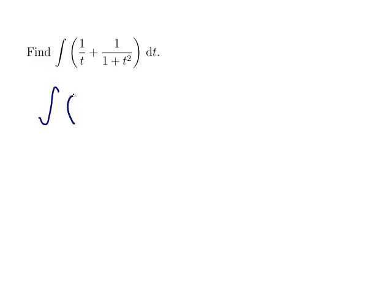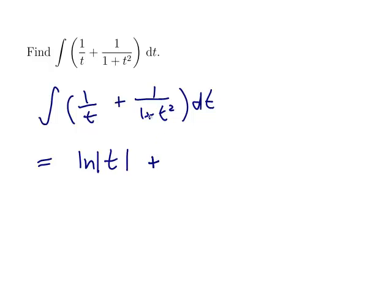The integral of 1 over t plus 1 over 1 plus t squared dt is, the integral of 1 over t would be ln, the absolute value of t, and the integral of 1 over 1 plus t squared would be arctan(t). And it's an indefinite integral, so plus c.